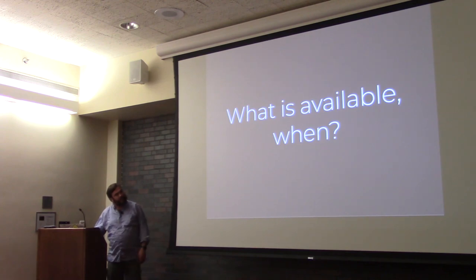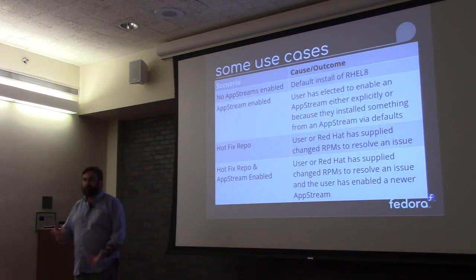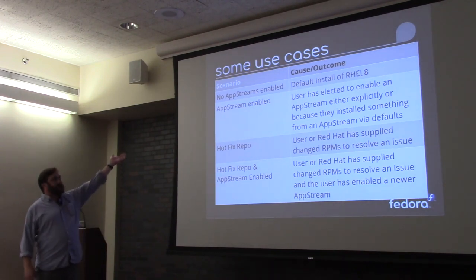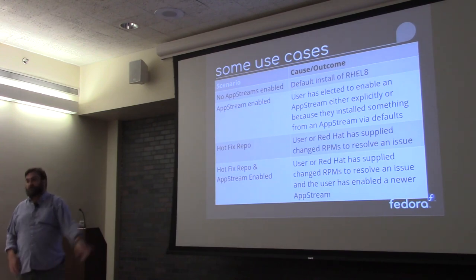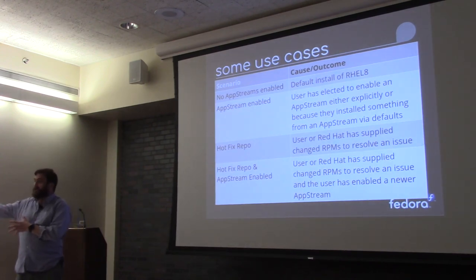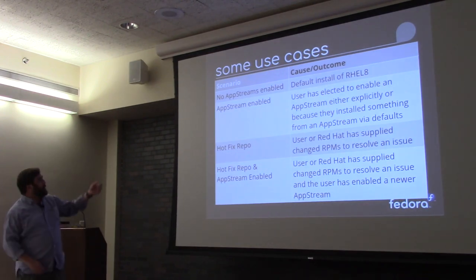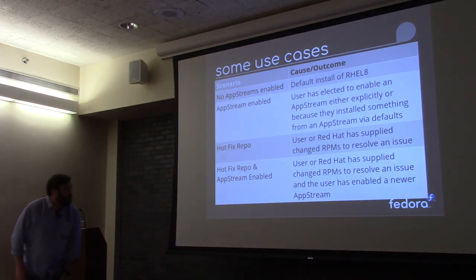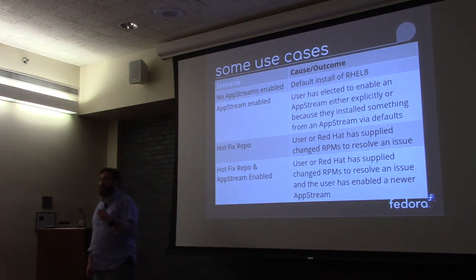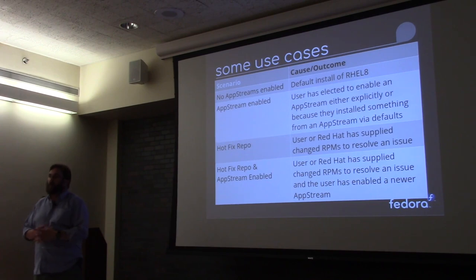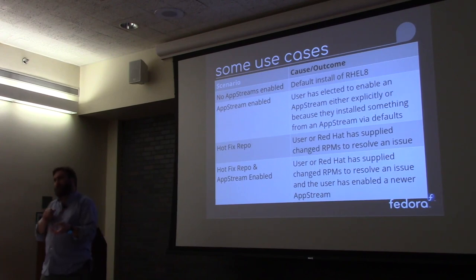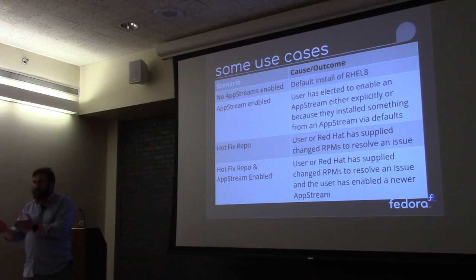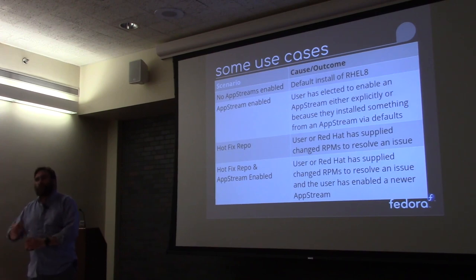In the default install of RHEL, no AppStreams are enabled at all. But if you install something from one of the default module streams, it shows up — which also causes an AppStream to be enabled. A user selects to enable an AppStream either explicitly or implicitly by installing something out of AppStream. We're working on changes to make it so that explicit only happens when you do it explicitly, because right now something installed via the default is treated as explicit, which is probably the wrong user experience.